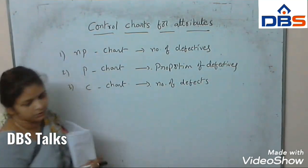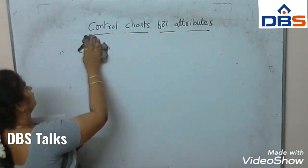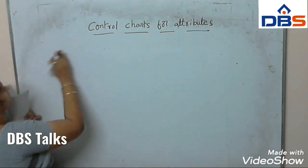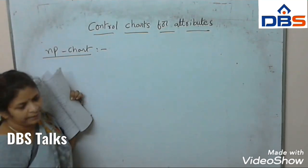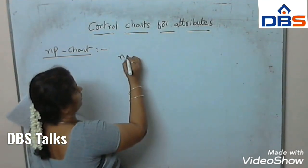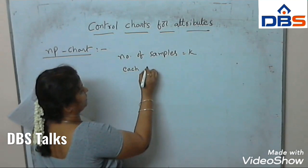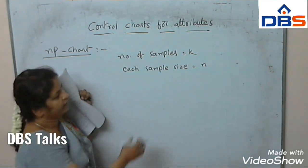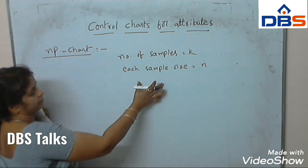Let us go to the NP chart. What is this NP chart and what are the properties of it? We consider K samples from production, and each sample size is N. So, number of samples equals K, and each sample size equals N — we take N elements in each sample.